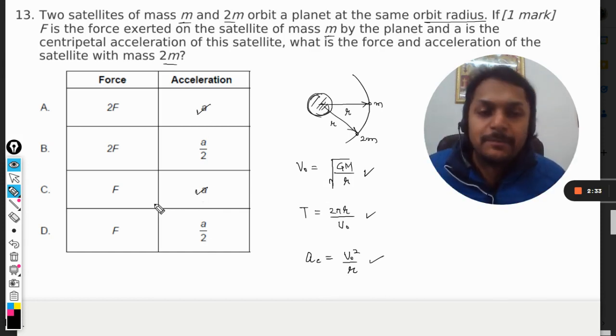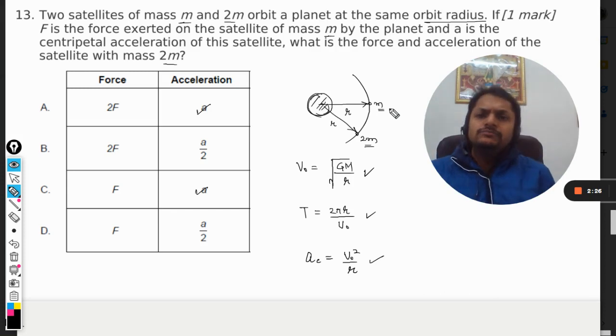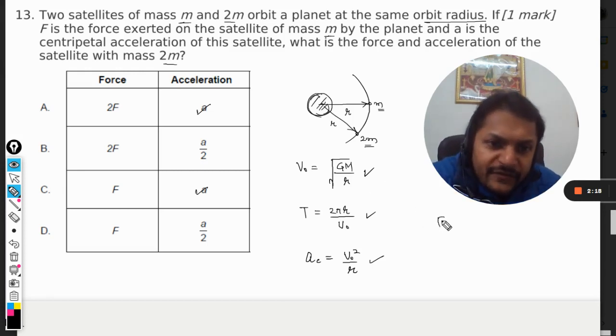So first of all, the acceleration will be the same. All these things are same, but what is not same? Like for example, this is heavier, this is smaller. So how come that both of them are having the same acceleration? Obviously they will be having different forces. So let us see what will be the force on the first.